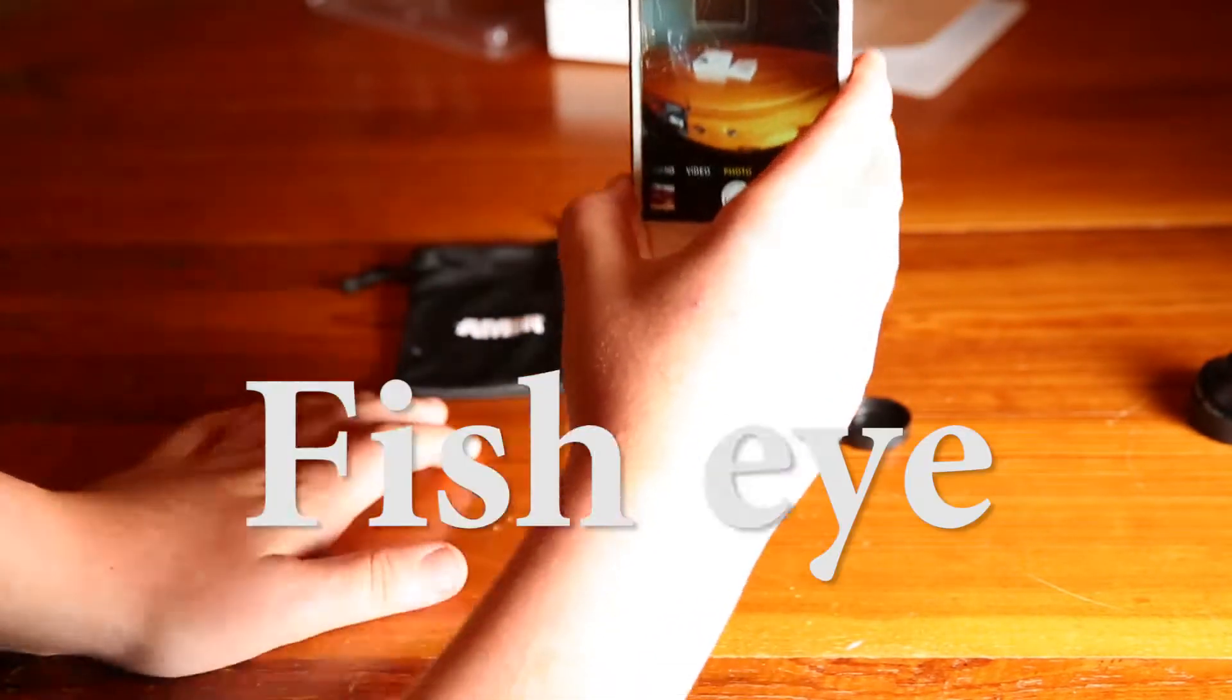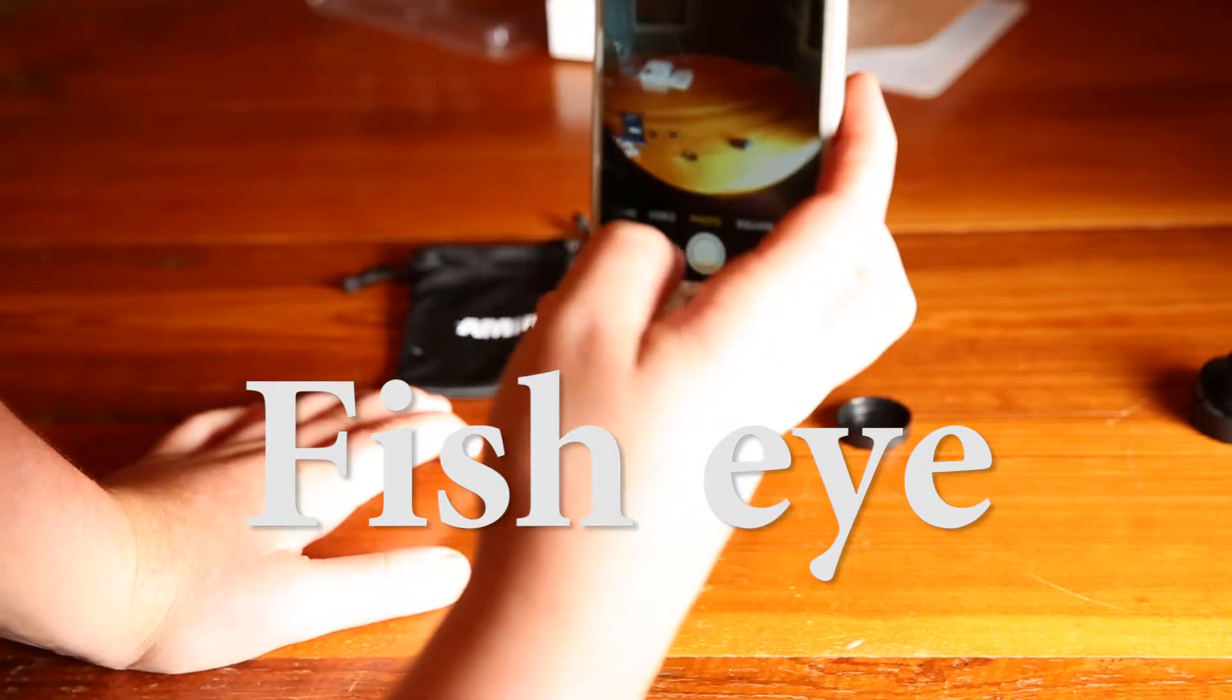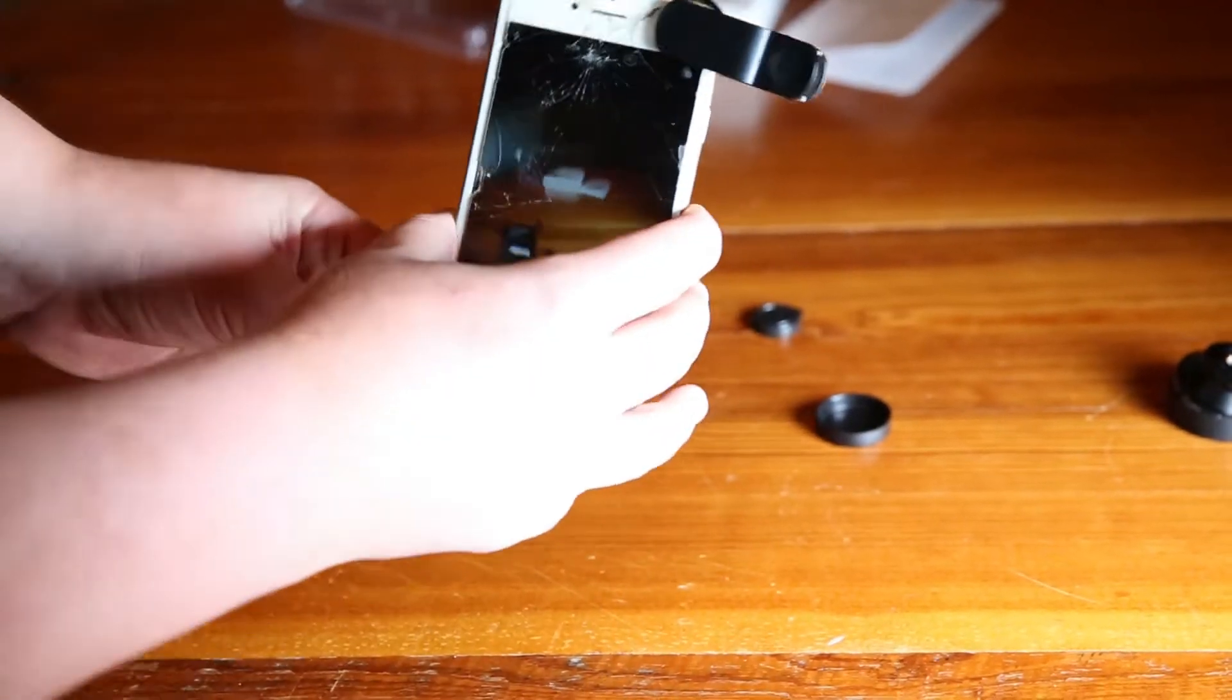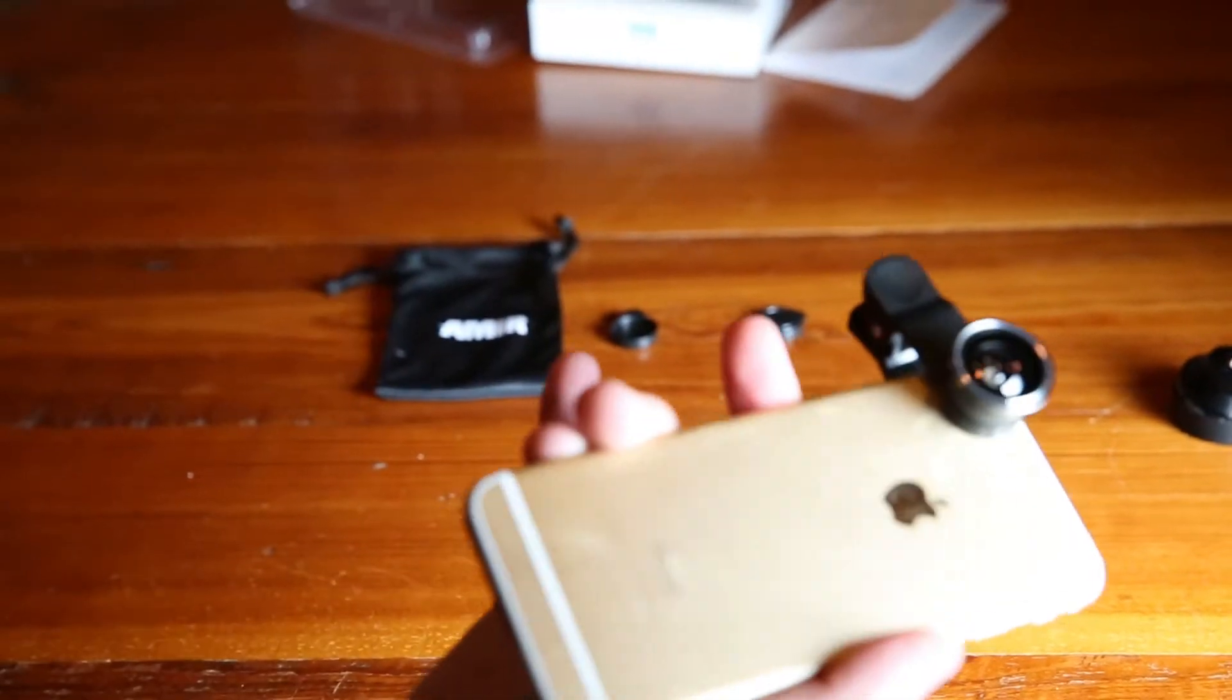And this is the fisheye, right? And that's just, I think it's pretty cool actually. It's like a little circle. This is the fisheye view, the smaller lens.